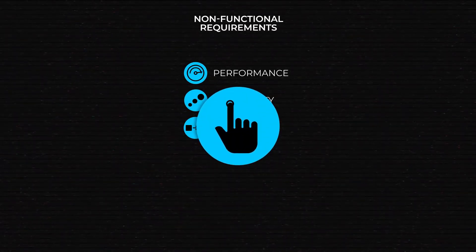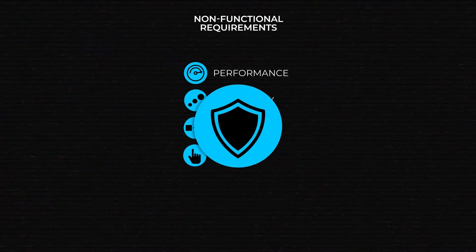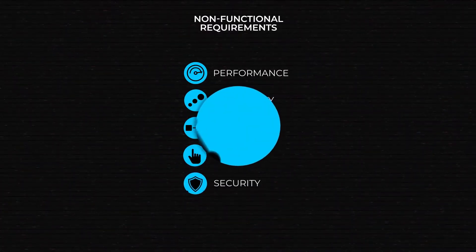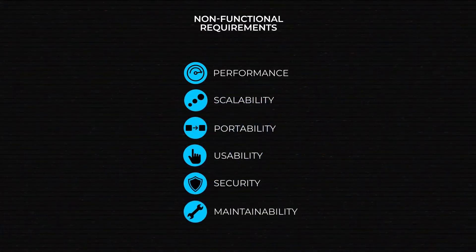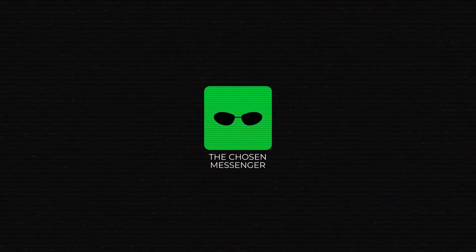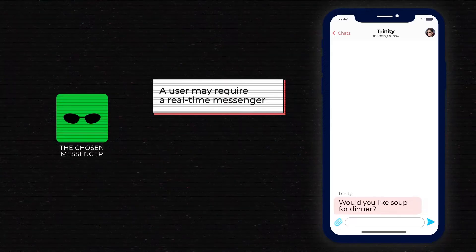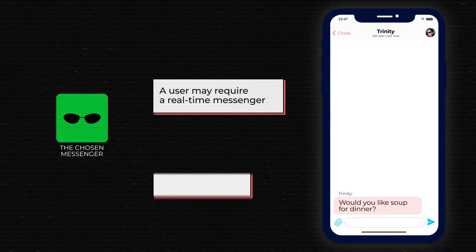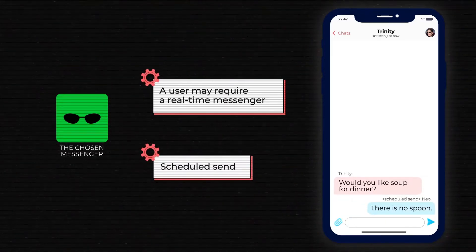Usability, or how easy it is to complete a certain action. Security, Maintainability, and the list can go on and on. Take, for instance, our social media application. A user may require a real-time messenger and even some smaller features like Scheduled Send as part of our functional requirements.